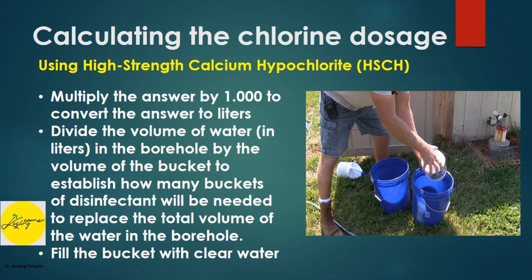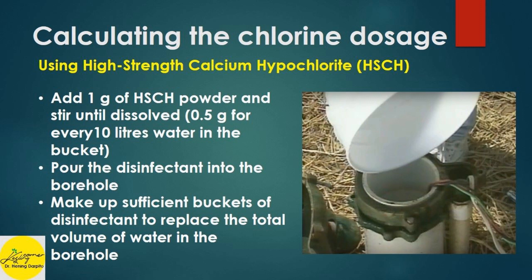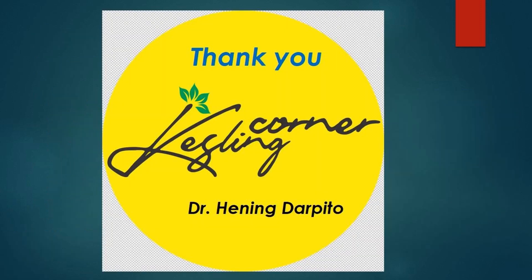Divide the volume of water in liters in the borehole by the volume of the bucket to establish how many buckets of disinfectant will be needed to replace the total volume of water in the borehole. Fill the bucket with clear water and add 1 gram of HSCH powder per 10 liters of water and stir until dissolved. Pour the disinfectant into the borehole, making up sufficient buckets of disinfectant to replace the total volume of water in the borehole.